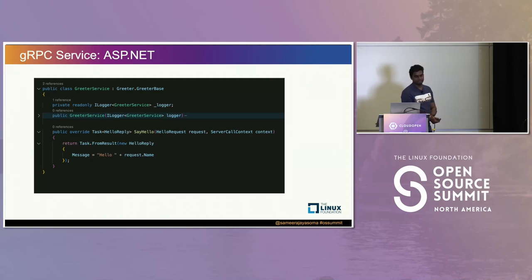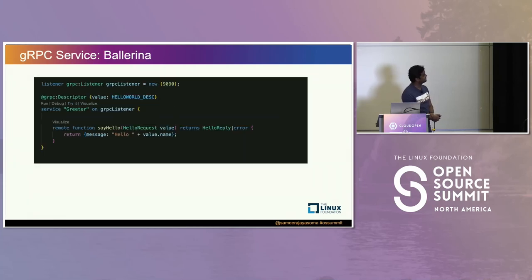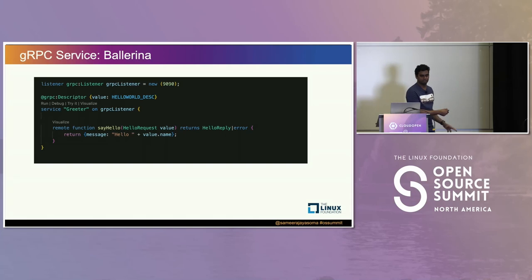The gRPC example in C Sharp uses a standard proto file with one method, 'say hello,' accepting a hello request and returning a hello reply. In Ballerina, it's the same structure — a service, but this time with a gRPC listener instead of HTTP. Earlier we had resource functions; now we have remote functions. In Ballerina, you can think of services as either a collection of resource functions for HTTP or a collection of remote functions for gRPC, depending on the protocol.